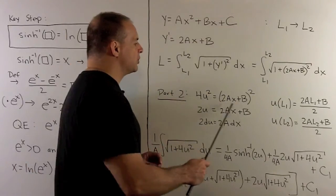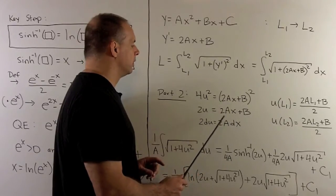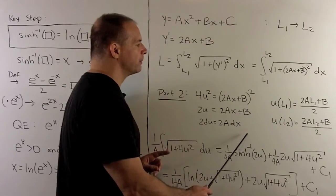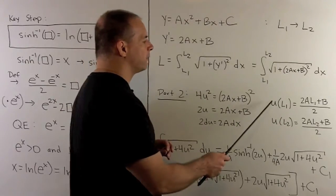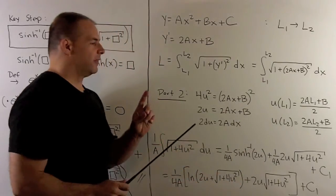The substitution I want to make is 2u equals 2ax plus b. I'll take derivatives on both sides to find our differentials. Then, we're going to solve for u to get our new limits.